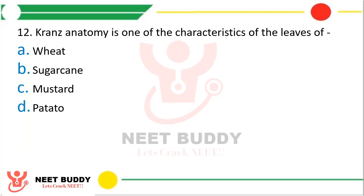Question 12. Kranz anatomy is one of the characteristics of the leaf of which plant — wheat, sugarcane, mustard, or potato? The correct answer is option B, sugarcane.